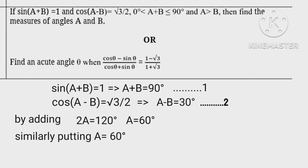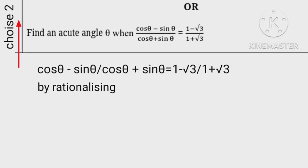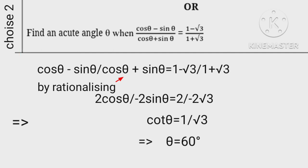Putting A equals 60 degrees in any equation, we get B equals 30 degrees. Coming to the second choice, we have rationalizing. Ultimately we get cot theta equals 1 upon root 3, hence theta equals 60 degrees.